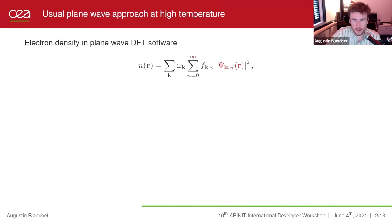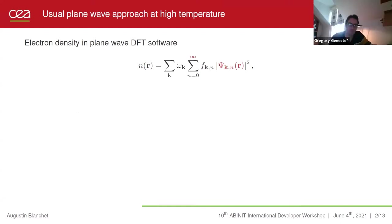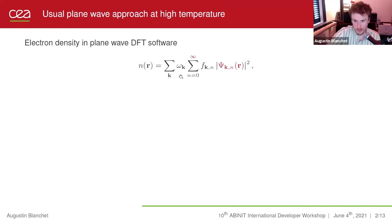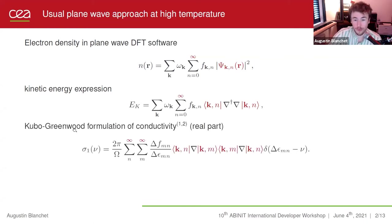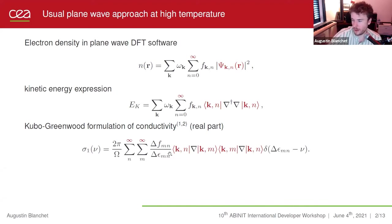In standard plane wave DFT software, many quantities use the wave function — for example, to get the electronic density — while decomposing the expression with respect to the k-points and the orbitals weighted with the Fermi-Dirac distribution f. We have the same approach with the kinetic energy expression, where we apply an operator to the wave functions. To go further, the wave functions are also needed to use the Kubo-Greenwood formulation of conductivity, where we are mixing two orbitals with different indexes.